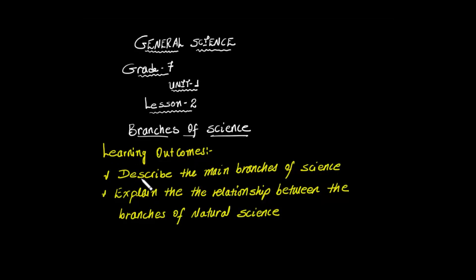This is the first time we will talk about learning outcomes. At the end of this lesson, you will describe the main branches of science and explain the relationship between the branches of natural science.